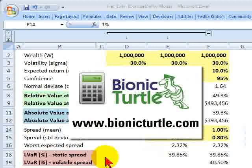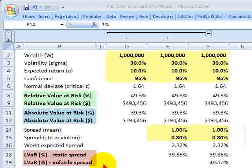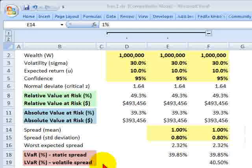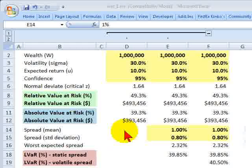Hello, this is David Harper of Bionic Turtle and a review of liquidity-adjusted value at risk. And for FRM candidates, this is based on Jorian and Christopher Culp.